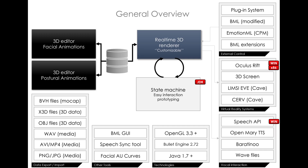MARC: a multimodal affective agent platform for advancing socio-emotional interaction. Embodied Conversational Agents (ECAs) that can interact with humans through verbal and nonverbal behaviors have promising applications in domains like education, healthcare, entertainment, and more. However, modeling the nuances and dynamics of human-like affective expression and dialogue continues to be a key challenge. The Multimodal Affective and Reactive Character (MARC) framework was developed to specifically tackle the problem of socio-emotional interaction between virtual agents and humans.